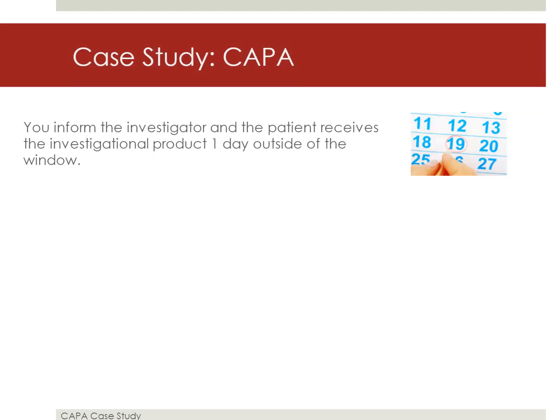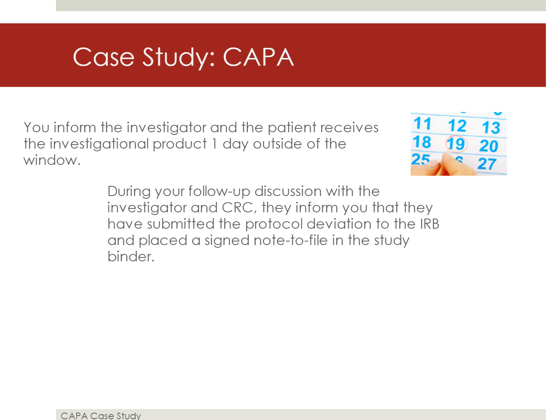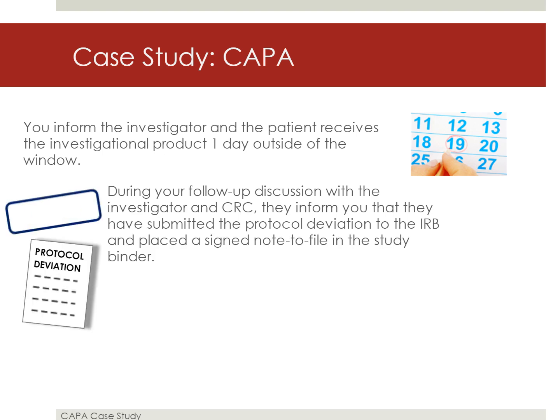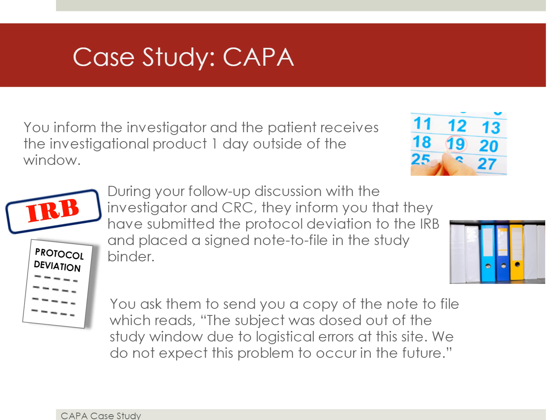You inform the investigator and the patient receives the investigational product one day outside of the window. During your follow-up discussion with the investigator and CRC, they inform you that they have submitted the protocol deviation to the IRB and placed a signed note to file in the study binder. You ask them to send you a copy of the note to file, which reads: 'The subject was dosed out of the study window due to logistical errors at this site. We do not expect this problem to occur in the future.'